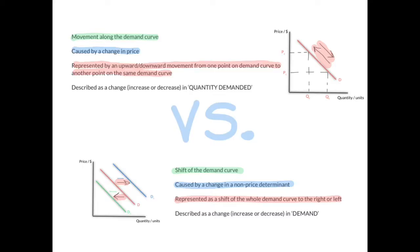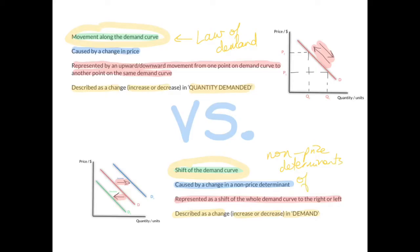A movement along the demand curve is described as a change in quantity demanded — we say quantity demanded has increased or decreased. A shift of the demand curve is described as a change in demand — an increase or decrease in demand. The law of demand explains movements along the demand curve, while the non-price determinants of demand explain shifts of the demand curve. I hope this quick review was helpful — have a good day.